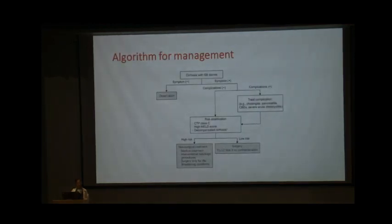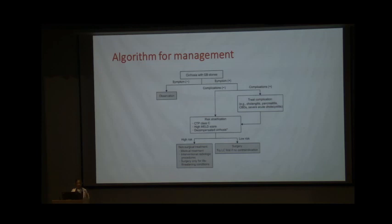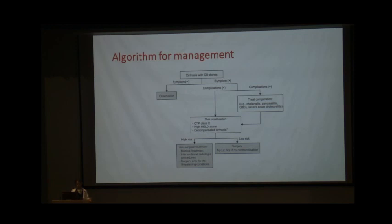A proposed management algorithm: in a cirrhotic patient with gallstones, if asymptomatic, observe. If symptomatic, assess for complications. Patients with complications should be managed medically — with drainage and antibiotics as appropriate — before risk stratification. Child C and Child B9 patients with high MELD (a cutoff of approximately 15 seems reasonable) should be offered alternative management; surgery reserved for life-threatening conditions such as bleeding or bile leak with peritonitis. Low-risk patients can be planned for elective surgery.